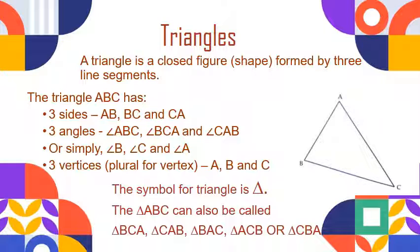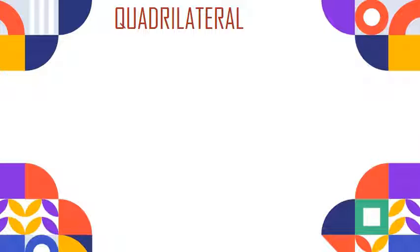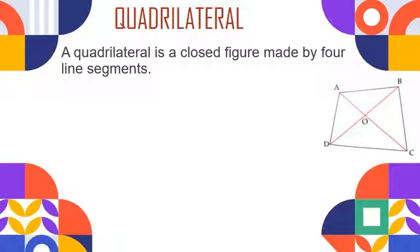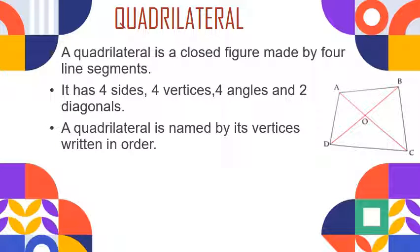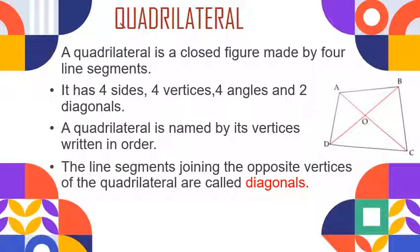The symbol for triangle is this. Triangle ABC can also be called triangle BCA, triangle CAB, triangle BAC, triangle ACB, or triangle CBA. Now let us recall what we understand by a quadrilateral. A quadrilateral is a closed figure made by four line segments. It has four sides, four vertices, four angles, and two diagonals. A quadrilateral is named by its vertices written in order. The line segments joining the opposite vertices of a quadrilateral are called diagonals.